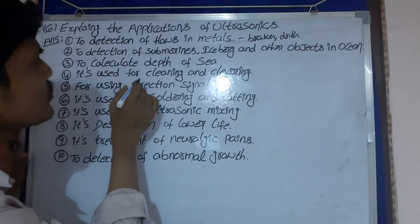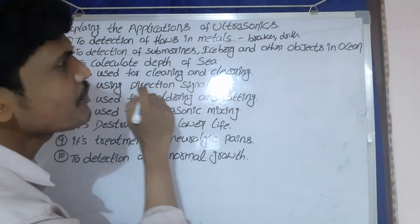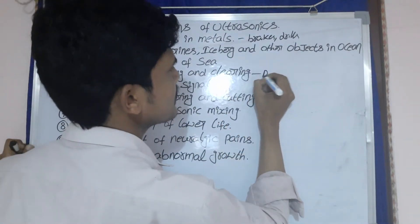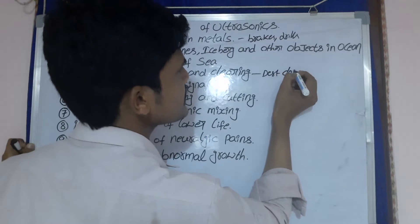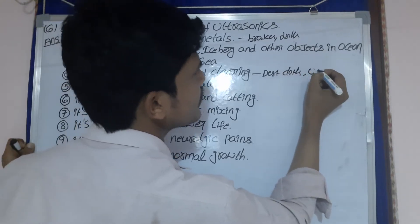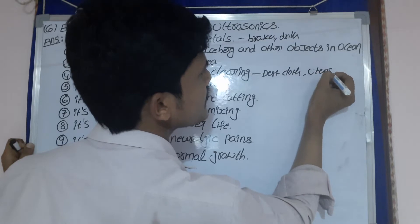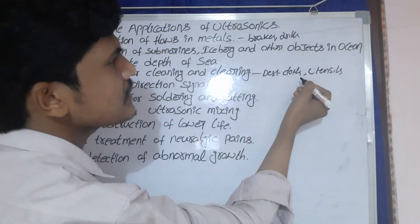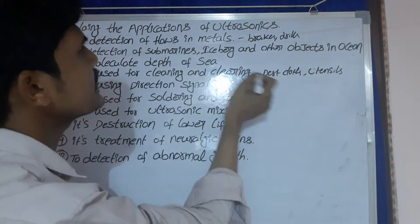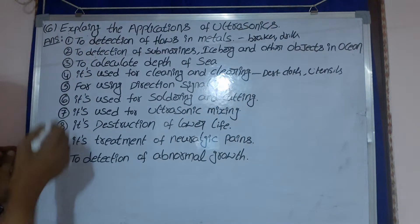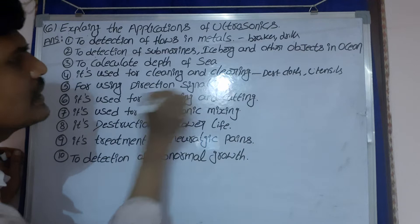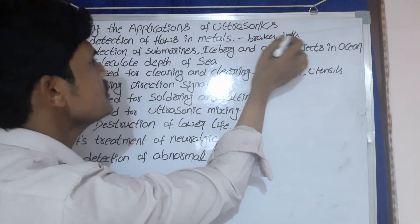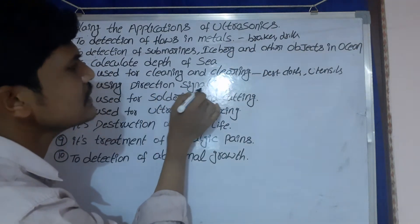Next one: ultrasonics is used for cleaning and clearing. Cleaning and clearing means removing dust from cloths or utensils — utensils means bowls. It is also used for directional signaling, using short wavelength ultrasonic waves.